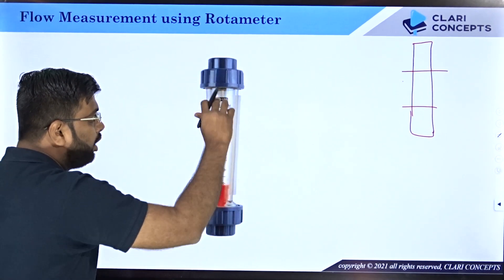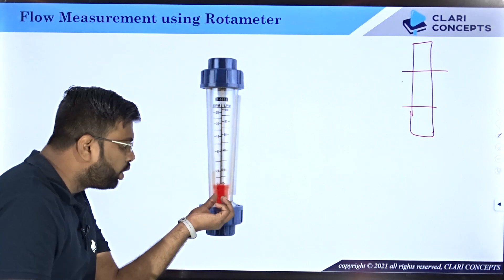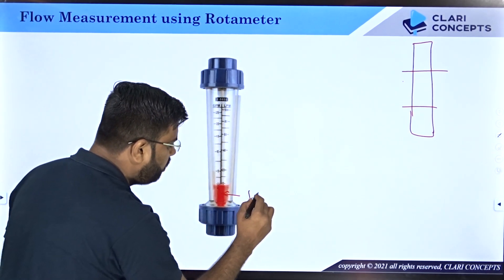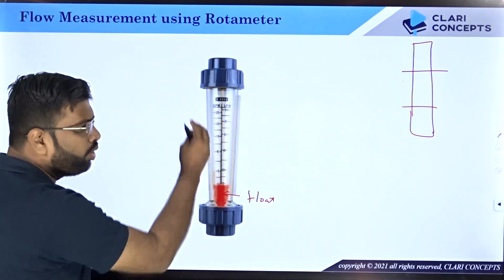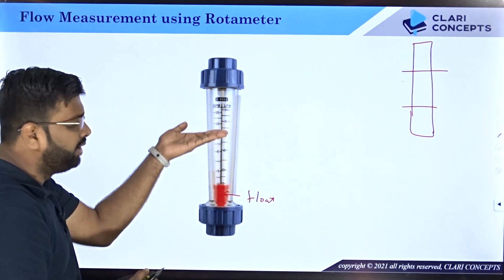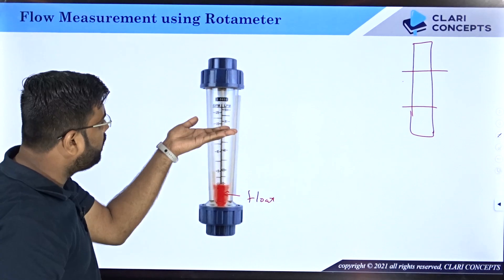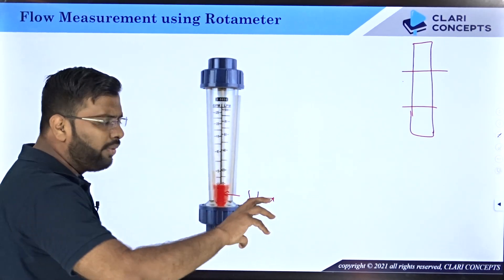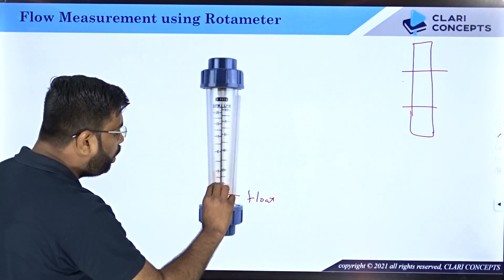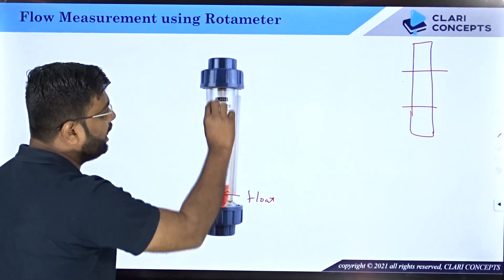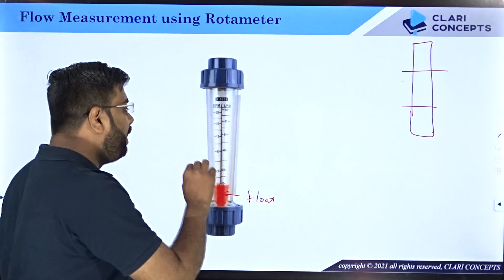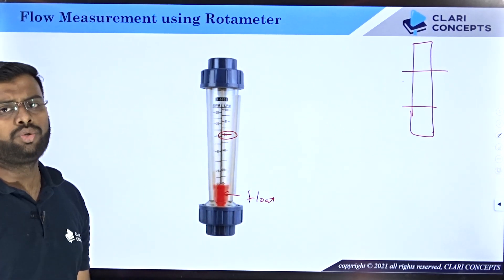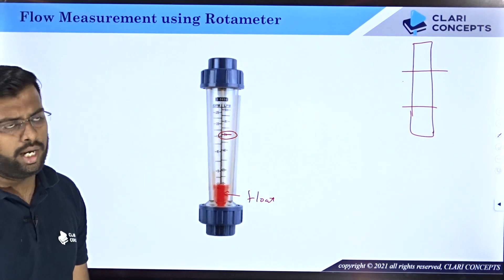In a rotameter there is a scale and a float — the orange-colored component is the float. The moment water starts flowing through it, the float rises and stops at a particular location corresponding to the flow rate. Depending on the position of the float, you can read off the flow rate — for example, so many liters per minute or cubic meters per second.